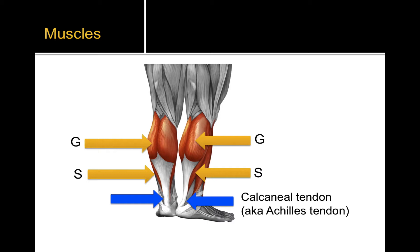In common everyday language we call this the Achilles tendon. Overall, the action of this muscle group is to achieve plantar flexion. So if you stand up straight with feet firmly planted on the floor and push up against the floor to draw your body up — push with your toes to draw your body toward the ceiling — that is plantar flexion. That's what these muscles are responsible for; that's their action.